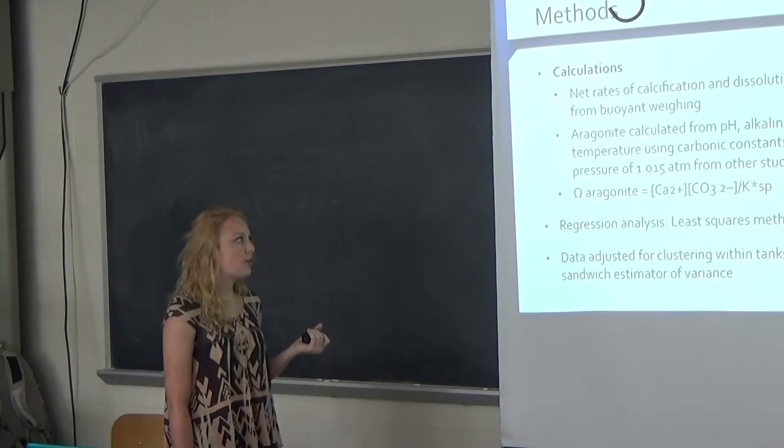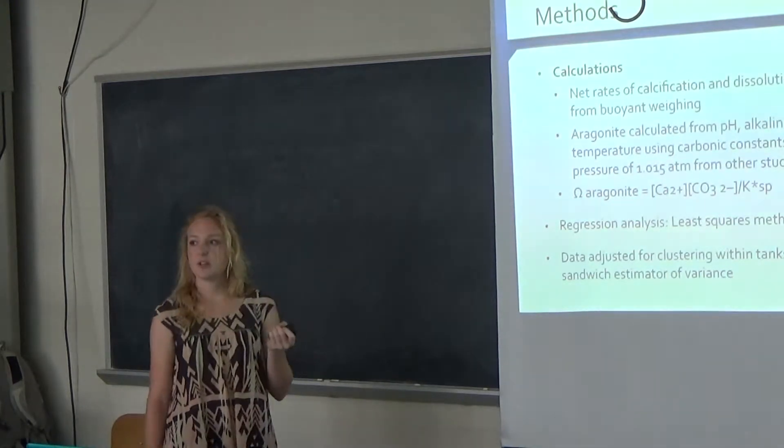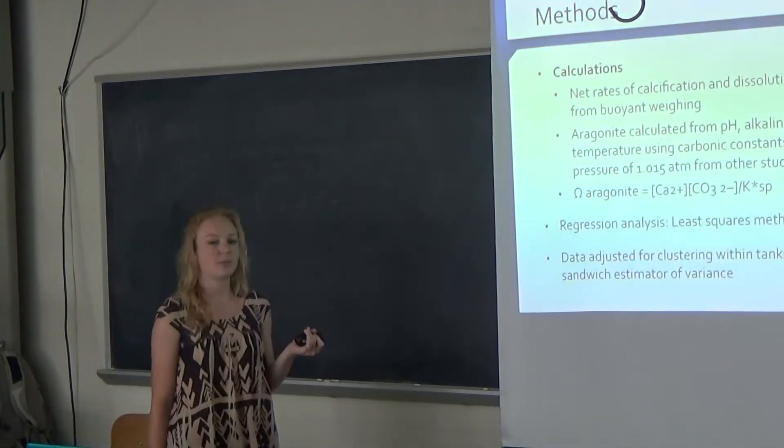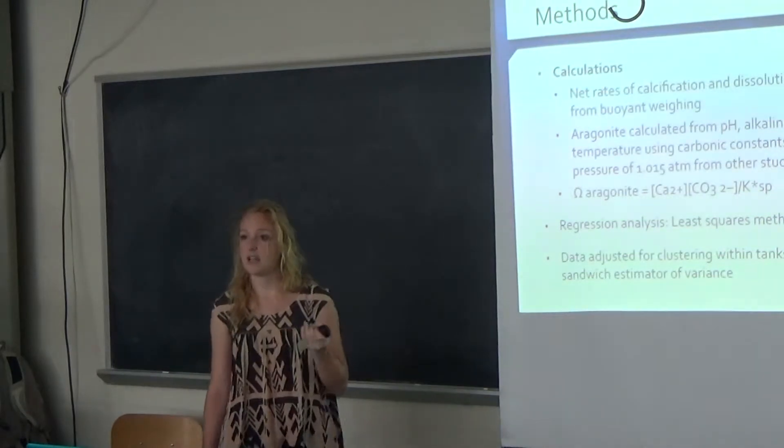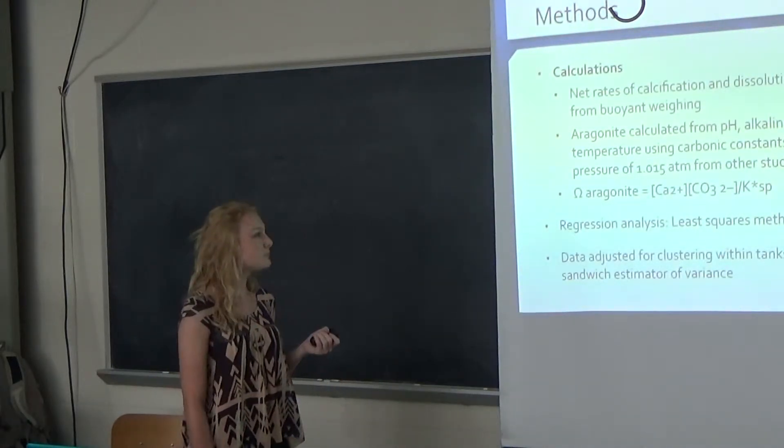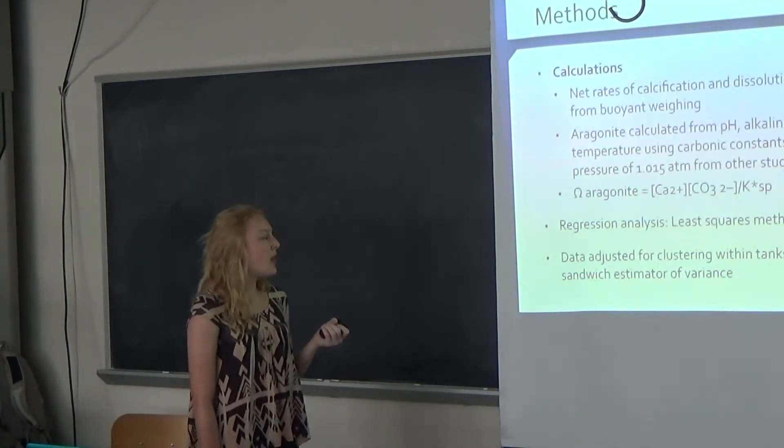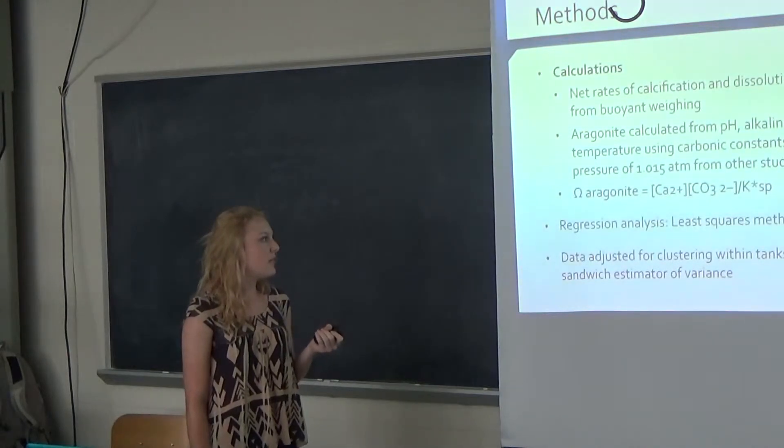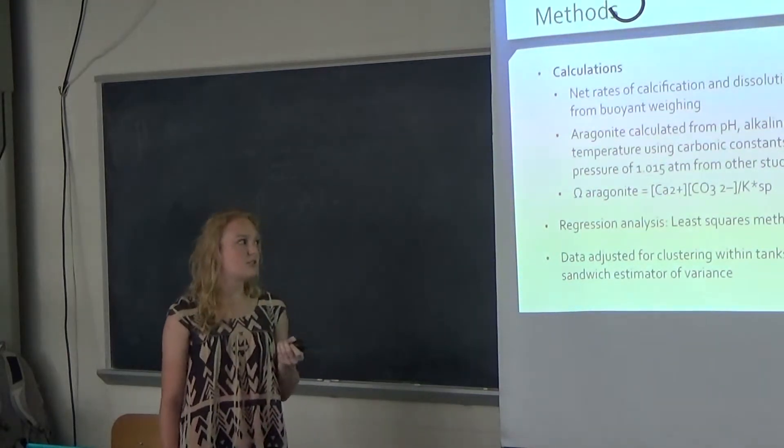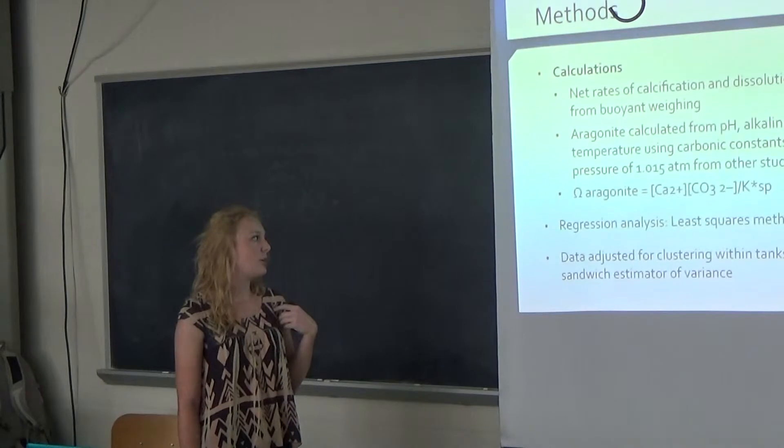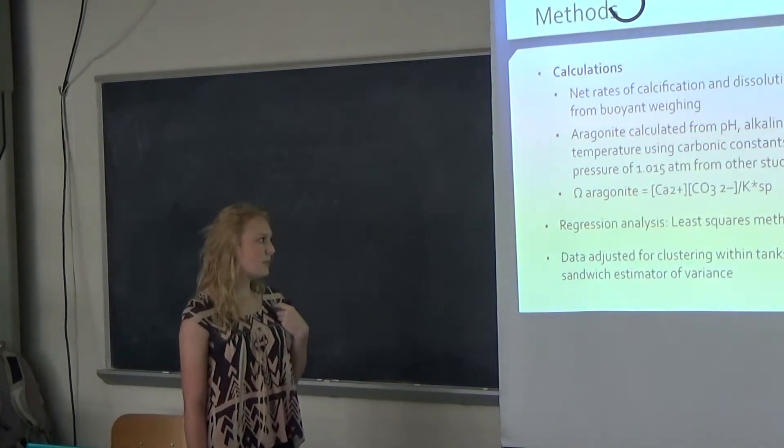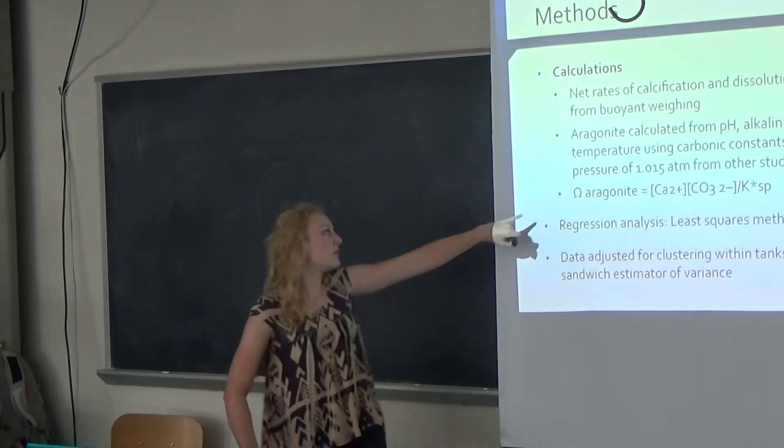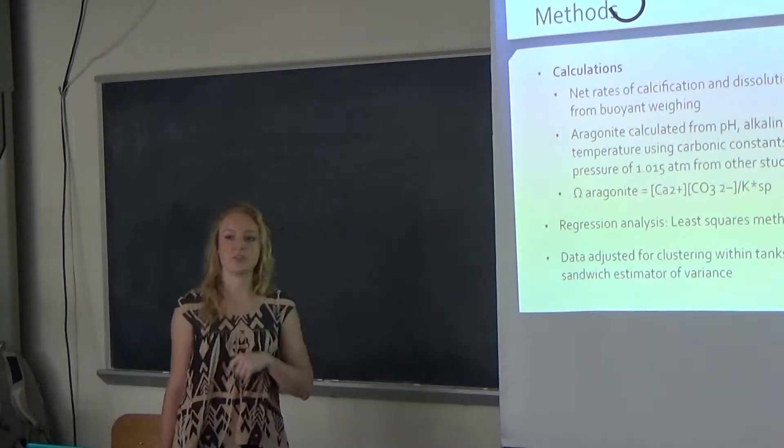They also had to calculate the aragonite and the saturation levels based off of the measurements of pH, the alkalinity, the salinity, and the temperatures that they gathered from the water samples. They used carbonic constants such as P1, P2, and the pressure in order to plug into this equation right here and gather the saturation levels.